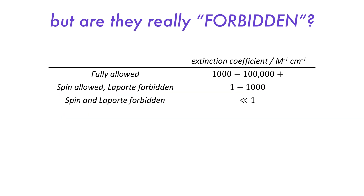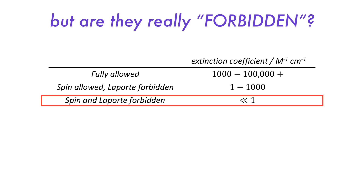Aqueous copper solutions, having deep blue colours, are examples of these types of transitions. If a transition is both spin- and Laporte-forbidden, then the extinction coefficients are typically much less than 1, which means that even if we make a concentrated solution, there is no colour visible to our eye — it is very weakly absorbing.